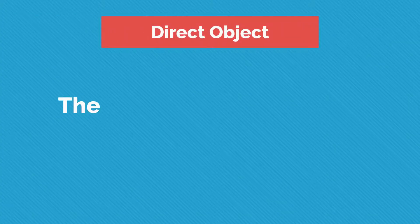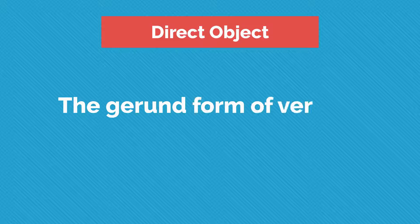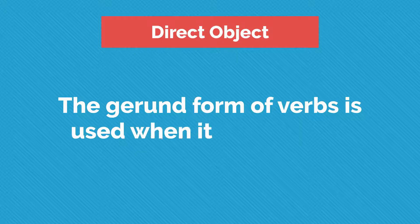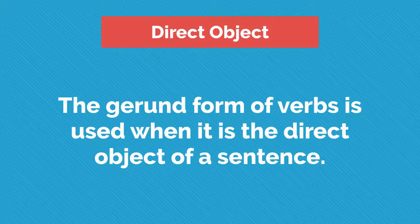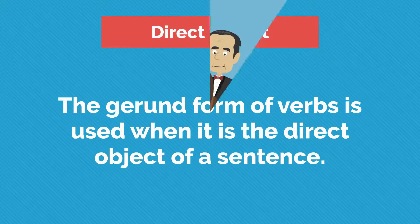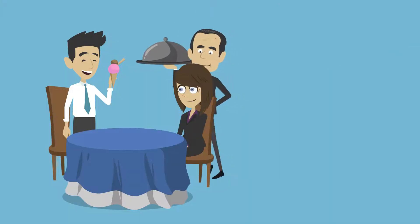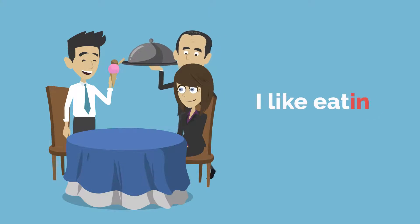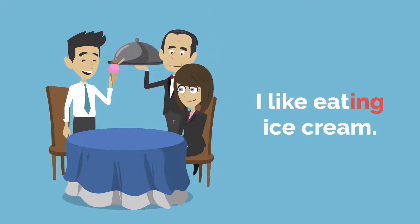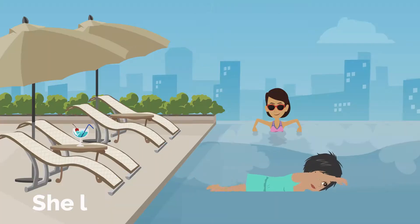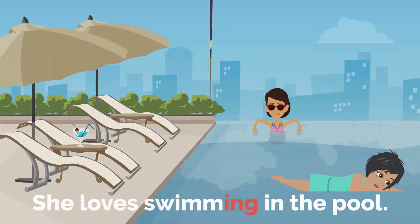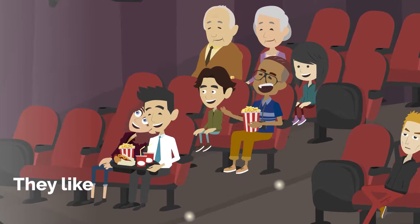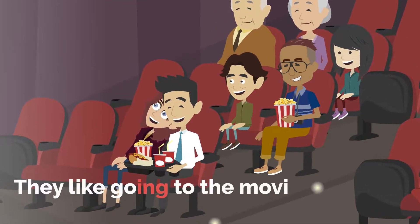The gerund form of verbs is used when it is the direct object of a sentence. For example: I like eating ice cream. She loves swimming in the pool. They like going to the movies.